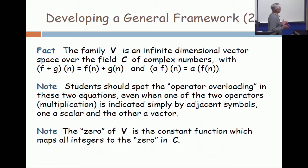f plus g operating on n is f of n plus g of n, and the scalar product, alpha times f, operating on n, is alpha times f of n. And I include this comment here: you should look at that and recognize that there's operator overloading going on in those statements. Look at the one on the left—on the left, the plus sign appears on both sides. But on the left side, it's talking about the sum of functions. On the right side, it's talking about the sum of two complex numbers.